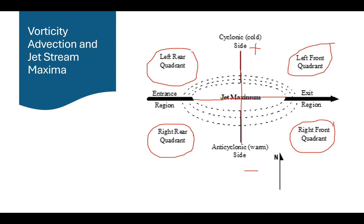The NWS National Weather Service, in their discussions, will talk about the left or right entrance regions — that's where air parcels initially begin to accelerate within the jet max. When you first enter the jet max, they accelerate — that would be the entrance region. You'll also hear or read NWS discussions referencing the exit region of the jet max, which is on the other side where air parcels decelerate. We divide the jet maxima into four quadrants with an entrance region and an exit region.